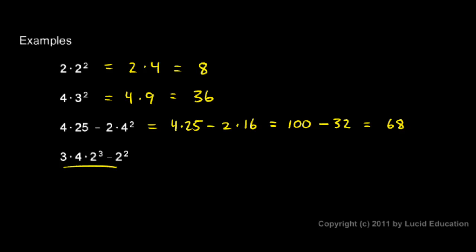Now this last one. 3 times 4 times 2 cubed minus 2 squared. Okay. We have to do the exponents first. So I'm just going to rewrite the problem. 3 times 4 times, now this 2 cubed, I'm going to go ahead and do that. And I know that's 2 times 2 times 2, which is 8. And then I have this minus sign. And then I have this 2 squared, which is a 4.